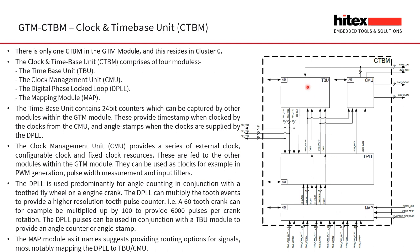The time-based unit contains 24-bit counters which can be captured by other modules within the GTM. These provide time stamps when clocked from the clock management unit, and angle stamps when provided by clocks from the digital phase-locked loop. The clock management unit provides a series of external clocks, configurable clocks and fixed clocks, which are fed to other GTM modules and can be used for PWM generation, pulse width measurement and input filters. The digital phase-locked loop is predominantly used for angle counting in conjunction with a tooth flywheel module on an engine crank.